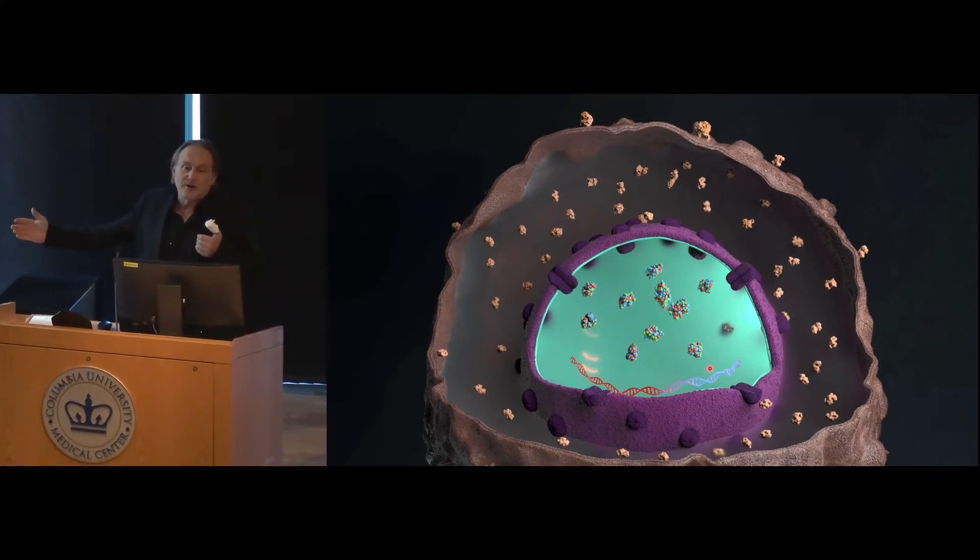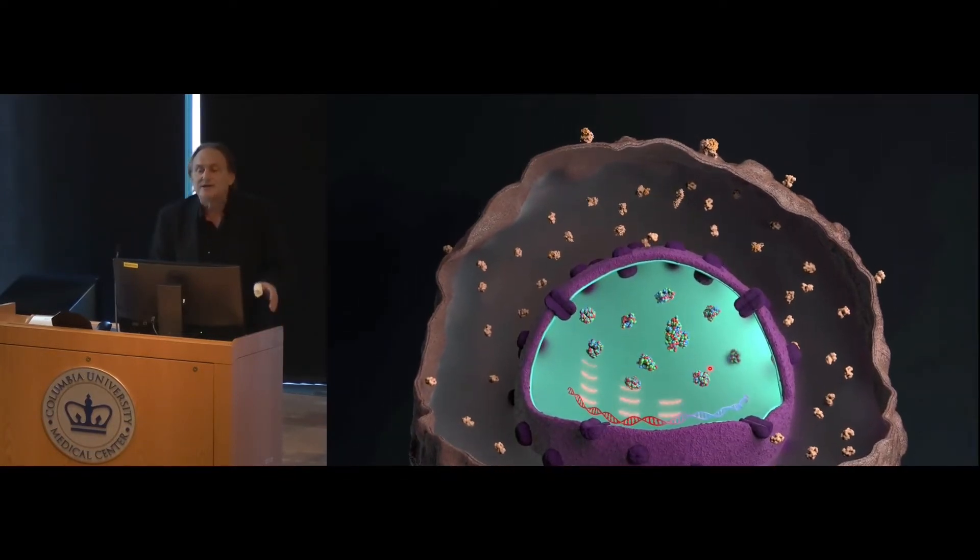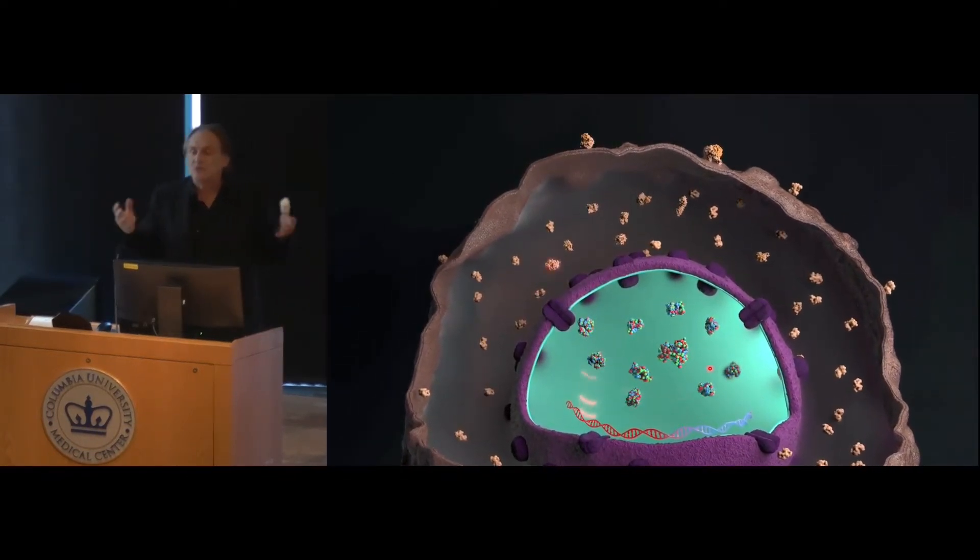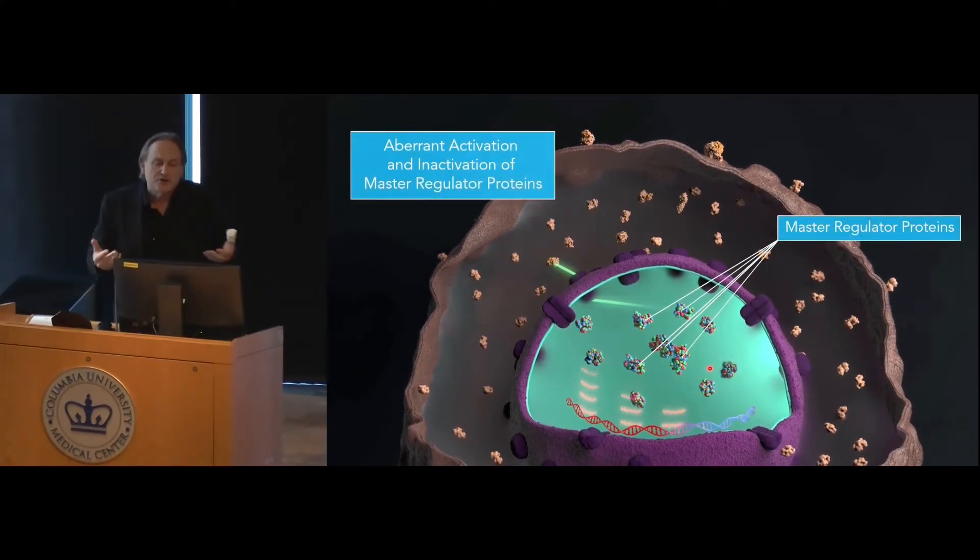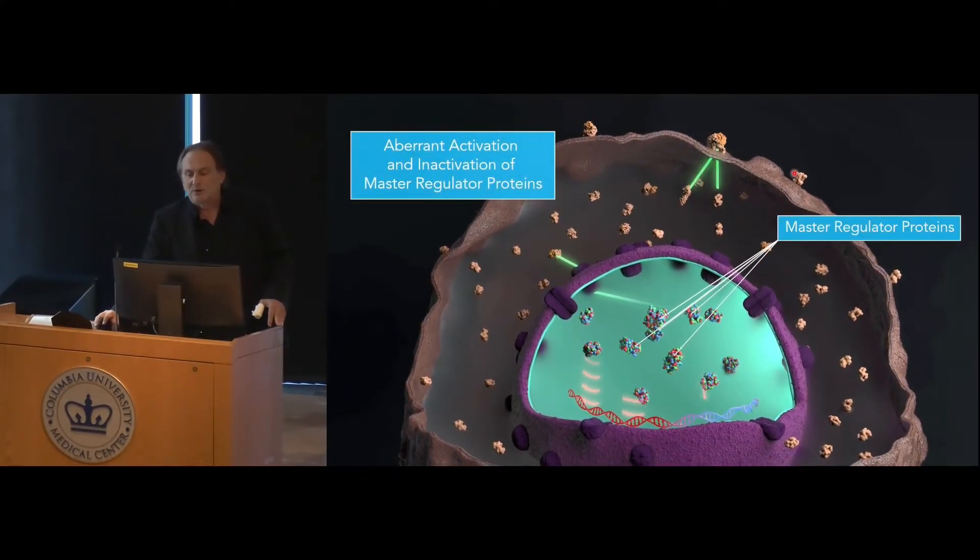So what happens in cancer? In cancer, what happens is that you start accumulating mutations, typically because you lose tumor suppressors. And so the mutations are now these little explosions that you see here.